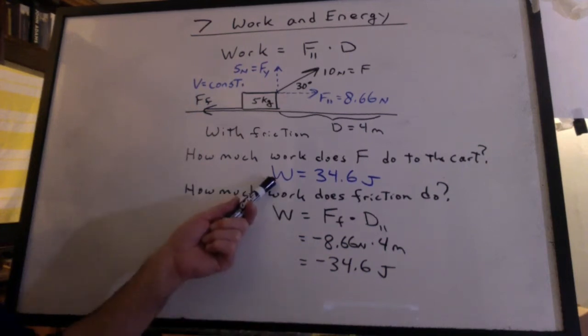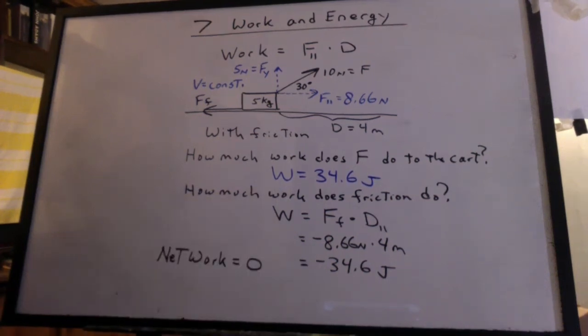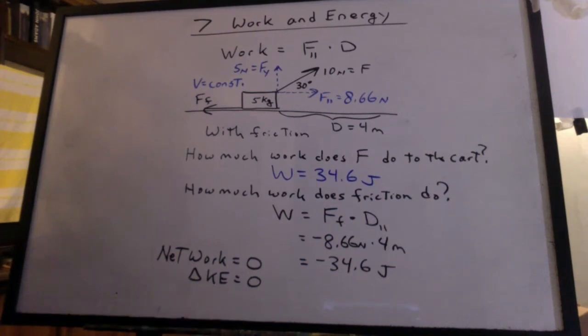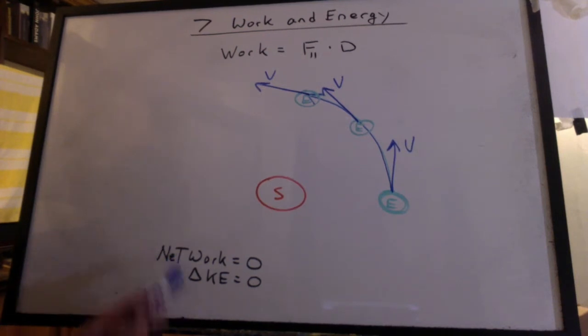Notice how the force added energy to the block, but the force of friction took it away. Notice that the net work done is zero. Also notice that the change in kinetic energy then is zero. It didn't speed up. What's all this have to do with the earth going around the sun? As the earth goes around the sun, the magnitude of the velocity is constant. It's not speeding up. The kinetic energy stayed the same, and that's because we're assuming this is a circular orbit.